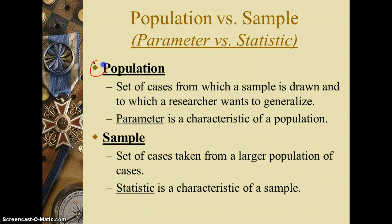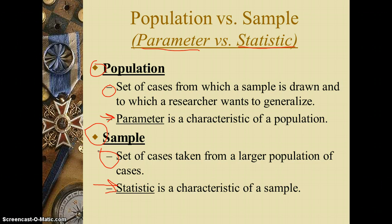Those groups we call populations and samples. If we're doing analysis with the whole population, we call them parameters, because those are the characteristics of a population. If we're doing it with just the sample, we call it a statistic, which is the characteristic of a sample. The population is the whole group — the set of cases from which a sample is drawn and to which a researcher wants to generalize — whereas a sample is simply a smaller set of cases.